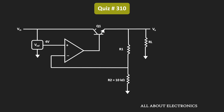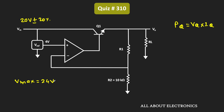The power getting dissipated across this transistor is equal to PQ, which is equal to VQ times IQ. First, let us find the voltage drop across transistor Q1. The input range is equal to 20V plus minus 20%, which means the maximum input voltage Vmax will be equal to 24V. The regulated output is equal to 10V, so the maximum voltage drop across this transistor, VQmax, will be equal to 14V.